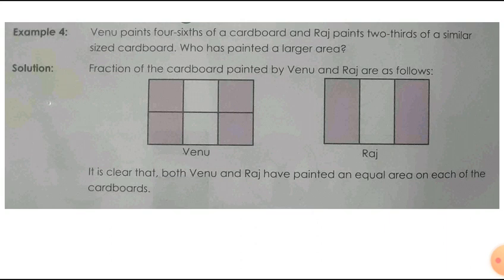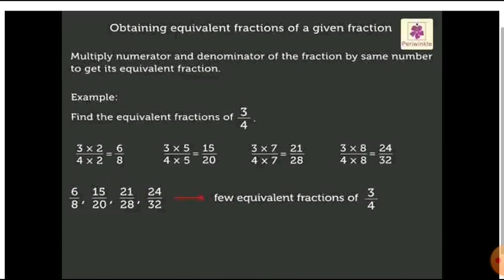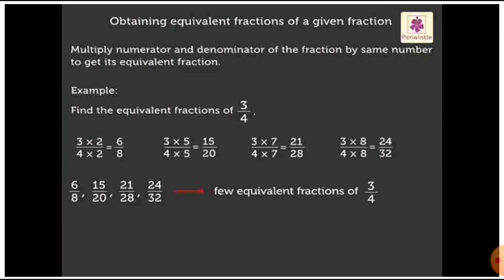I hope the concept of equivalent fractions is clear for you. Equivalent fractions are fractions which show the same part of the whole — the fractions which show the same part of the whole are called equivalent fractions. Now we are moving to obtaining equivalent fractions of a given fraction. To get the equivalent fraction of a given fraction, you multiply or divide the numerator and denominator of the fraction by the same number.